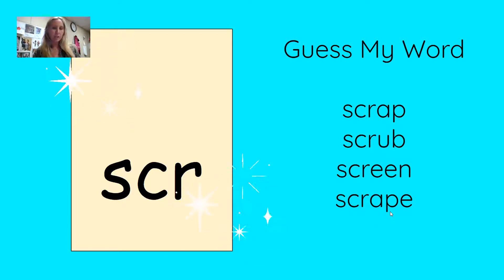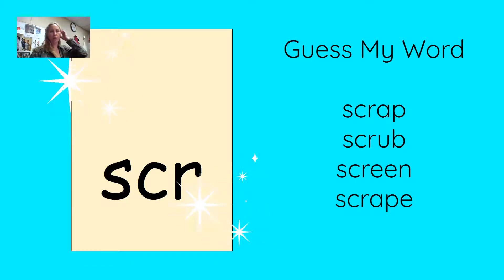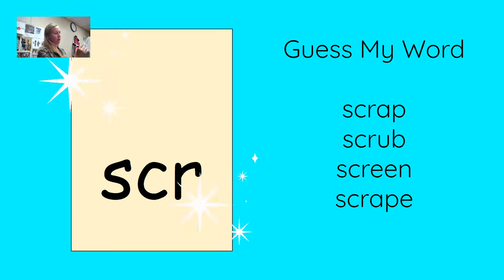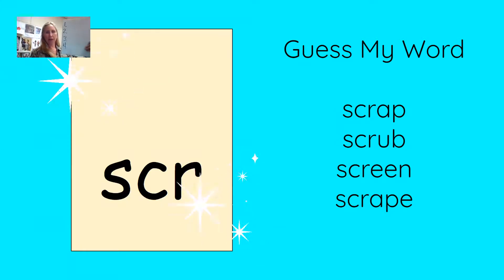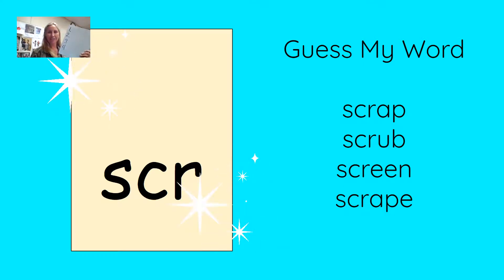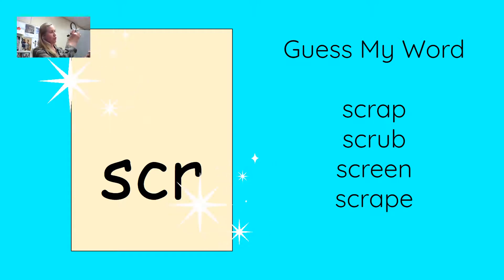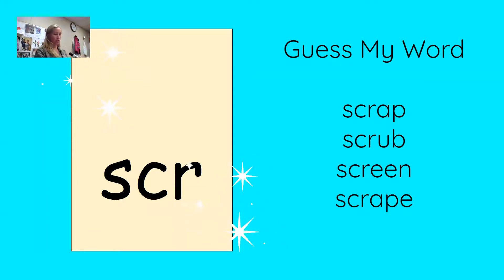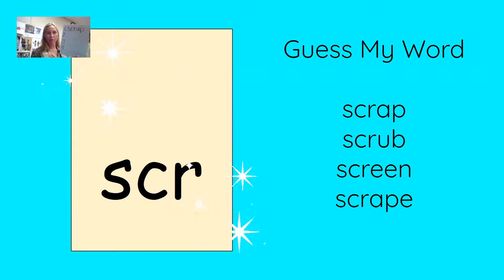We're going to play a game and you'll need your whiteboard or a piece of paper. Number it one, two, three, and four. I'm going to give you clues and you're going to try to guess my word — I like to call it 'read my mind.' For line number one, choose any word. I'm going to choose 'scrap' — that's my secret word. Write your word on line number one.